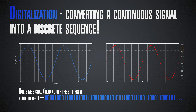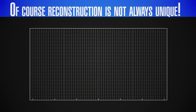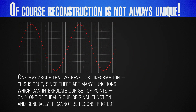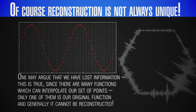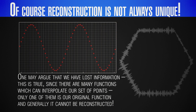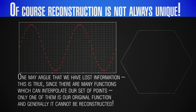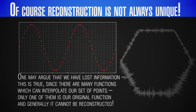The reconstruction of the full continuous signal would never be unique if we only had a discrete finite number of points. But there is a special case in which we can actually completely recover a signal after it has been digitalized, back into its analog form. This is what is given to us by the Nyquist-Shannon theorem.